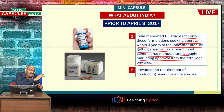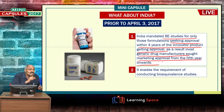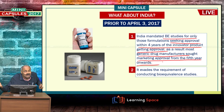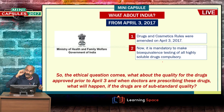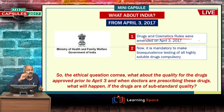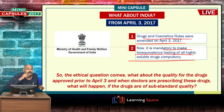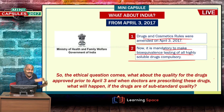Generic drug manufacturers prior to April 3 were avoiding bioequivalence studies by postponing their drug release to the fifth year onwards. The government then changed the Drugs and Cosmetics Rules from April 3, making bioequivalence testing of all highly soluble drugs compulsory. Prior to April 3, it was not compulsory from the fifth year onwards.